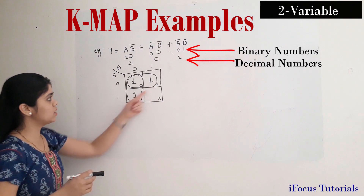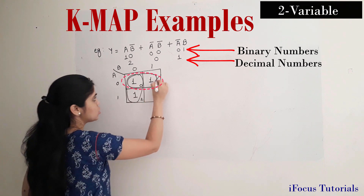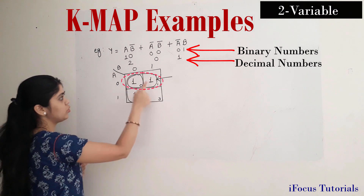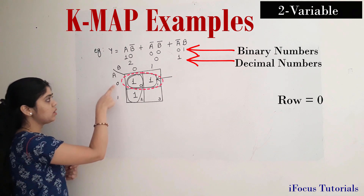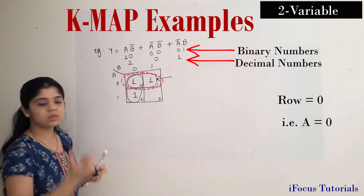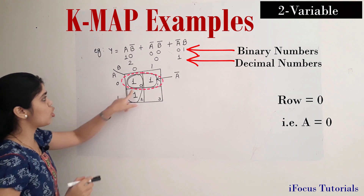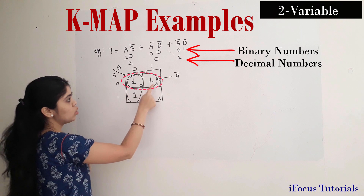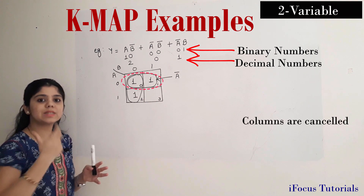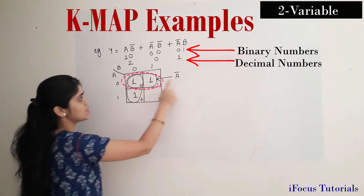Now we have to represent these groups in terms of an expression. I will start with box numbers 0 and 1. While writing the expression, we have to observe both the rows and the columns. If you observe the row, it is indicated by a 0, and this 0 is indicated by variable name A. In SOP, the complemented form is denoted by a 0, so I will write this expression as A bar. Now observing the columns: box 0 and box 1 have no common column term — 0 and 1 are opposite, so they cancel. So the entire expression for this pair is A bar.